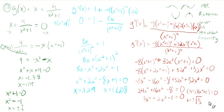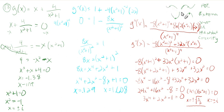A point of inflection is where we switch concavity. Everywhere concave up, the second derivative is positive; everywhere concave down, it's negative. Right in between those two concavities, the second derivative must equal zero. That's why we set g″ = 0 — and we get possible inflection points at x = ±√(1/3).